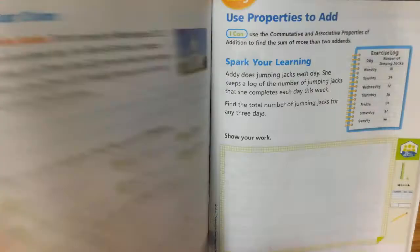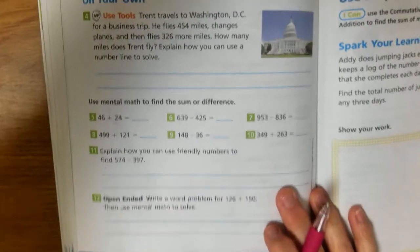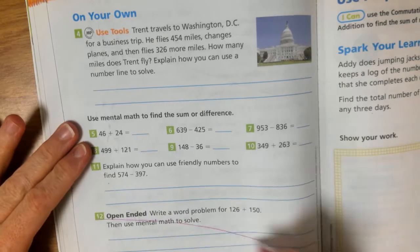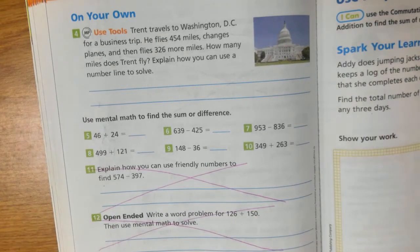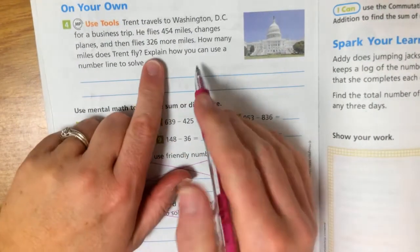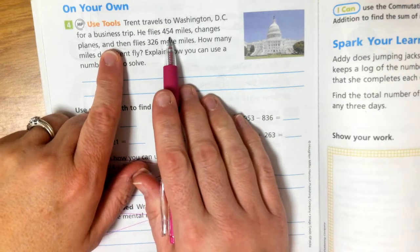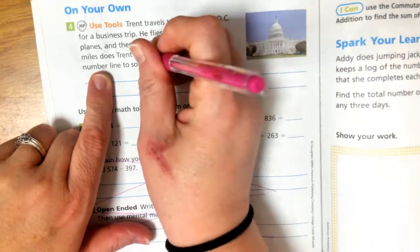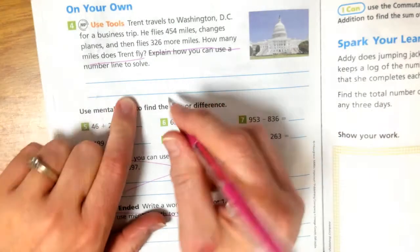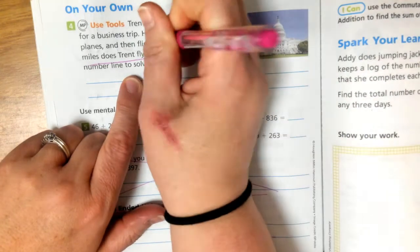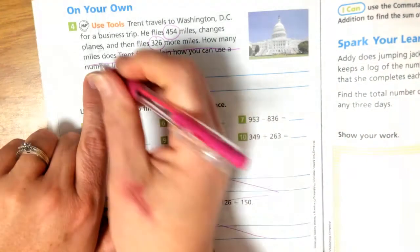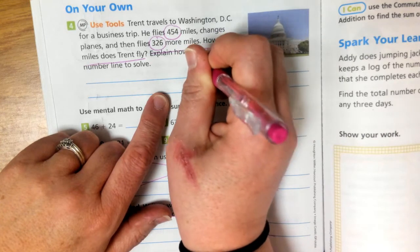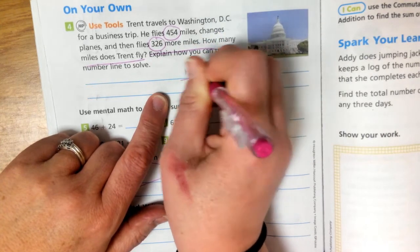So we're on to the On Your Own section. If you want to do this independently you can go ahead and pause the video and do it yourself and then come back and check your answers. We are going to skip number 12 and number 11. Okay. Trout travels to Washington D.C. for a business trip. He flies 454 miles, changes planes, and then flies 326 more miles. How many miles does Trout fly? We're not going to worry about using a number line. If you want to though you can but we're not going to. We're just 326. So we want to know how many miles total he travels. So I'm just going to write that problem right here. So we have 454 plus 326. So we know we're adding.